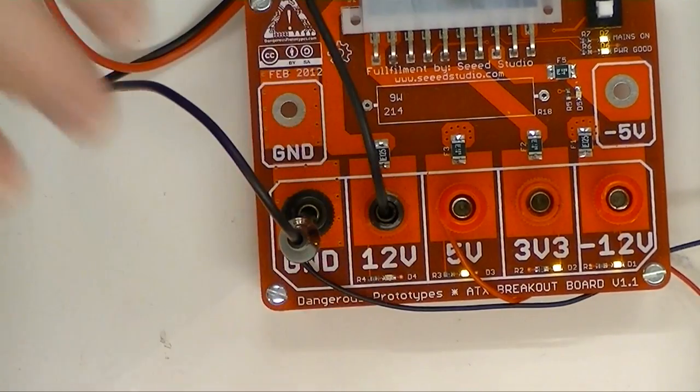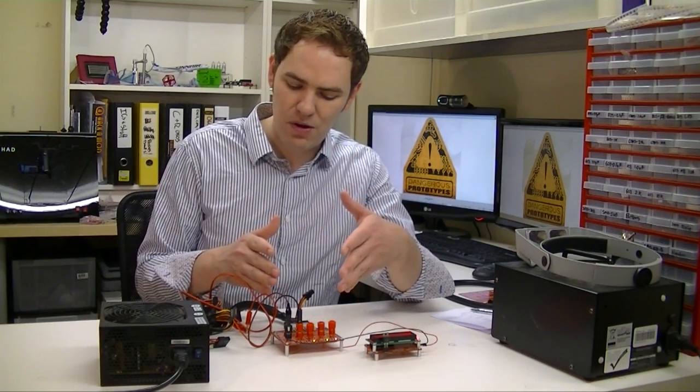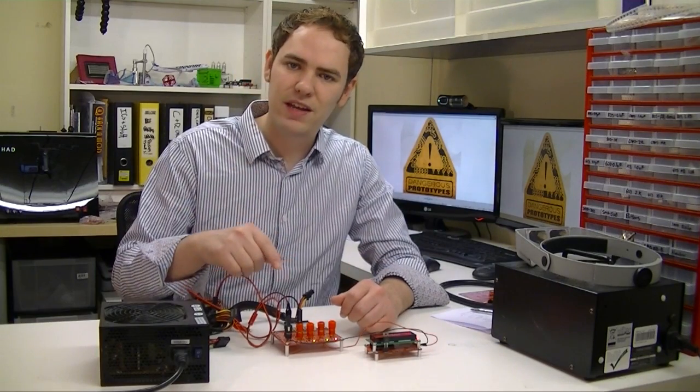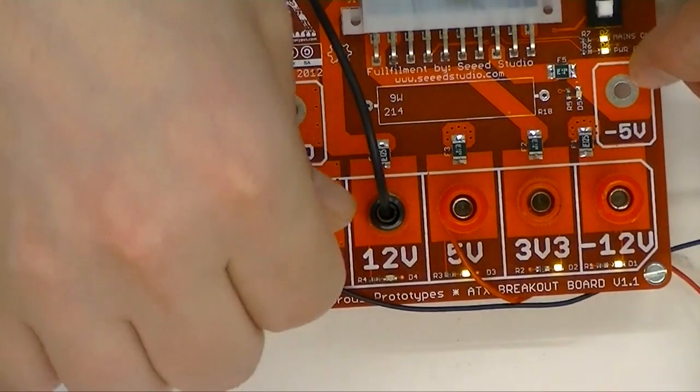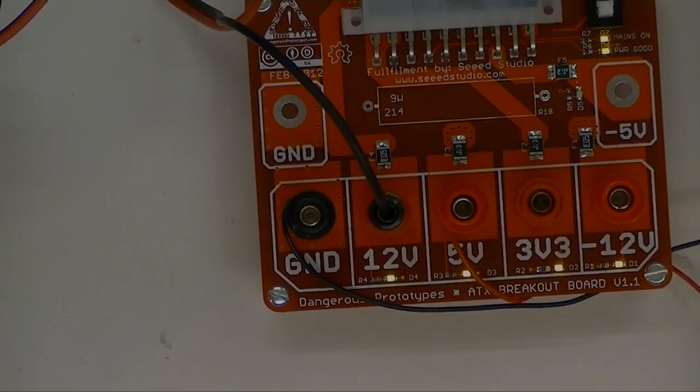So here goes. You can see the 12 volt rail went out, it's no longer providing power but we didn't smoke the power supply, we didn't smoke the board and when I remove it in just a brief amount of time the fuse will reset and the LED will come back on. And there you go. A modicum of protection for your projects.